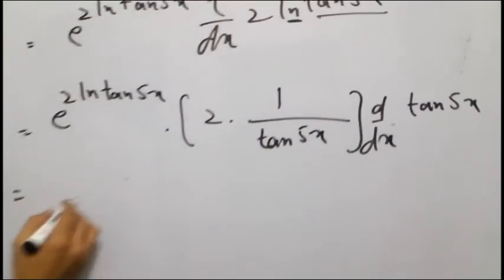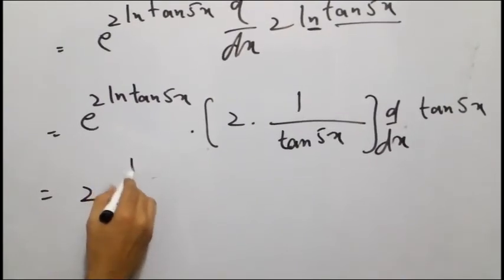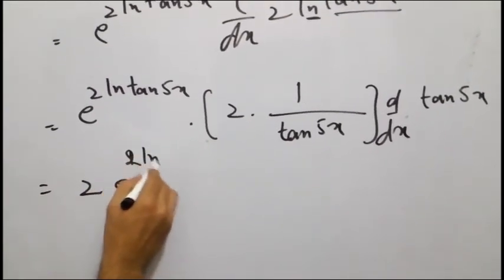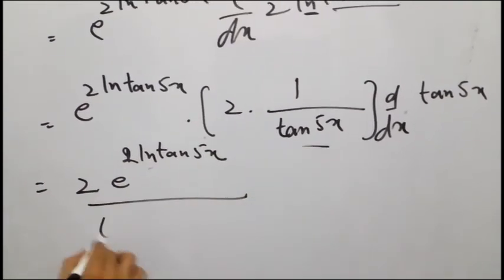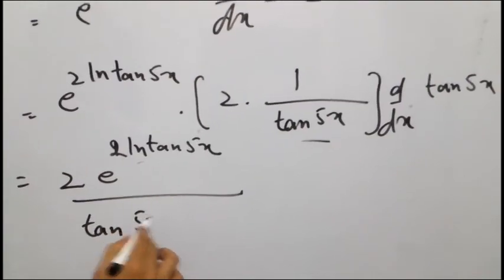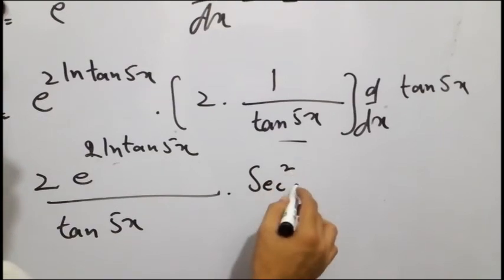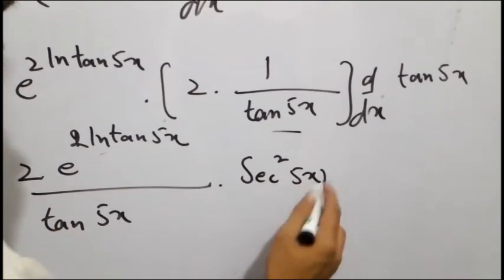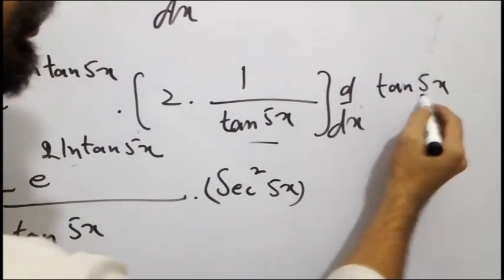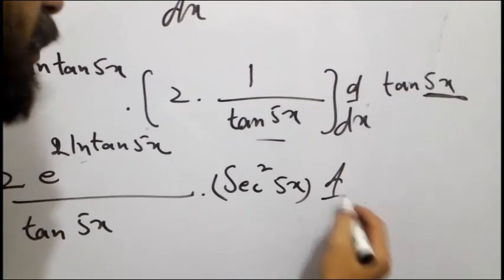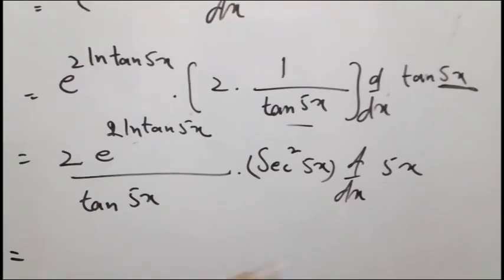यह value 2 आई। इन दोनों को multiply करें तो: 2 e raised to power 2 natural log of tan 5x, बटा tan 5x। tan 5x का जो derivative होता है — sec² — इसका theta 5x है, तो दुबारा से derivative लेंगे। 5x का derivative होगा 5, तो 5 भी आ जाएगा।